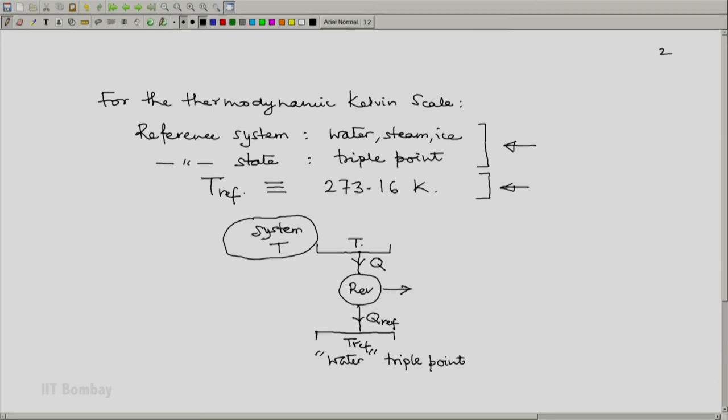And since we have defined T ref, T is calculated from the formula T by T ref is Q by Q ref. And we will be conscious of the fact that this is reversible. So we will be using this capital R symbol almost everywhere to indicate that what we mean is a reversible process or a reversible cycle or thermodynamic reversibility wherever involved.